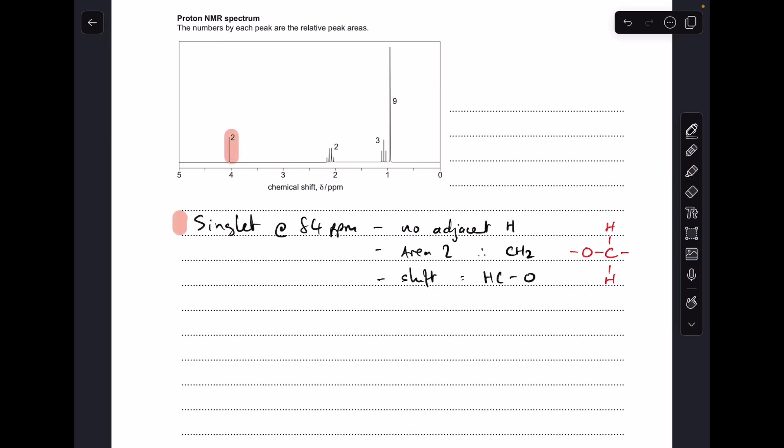Starting with the signal that I've highlighted there at δ 4 ppm, that's a singlet, so we're using the correct terminology for the type of signal. What does a singlet mean? It means there's no adjacent hydrogen to the hydrogens causing the signal.